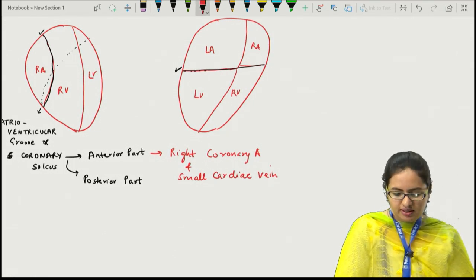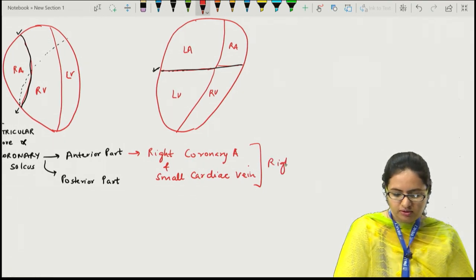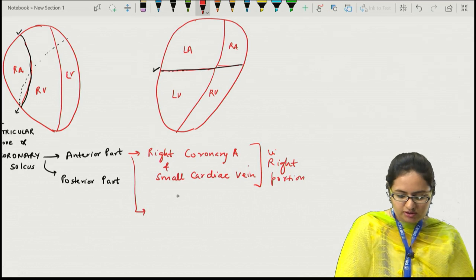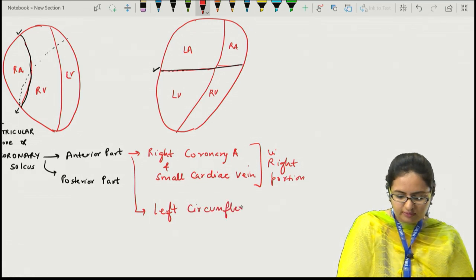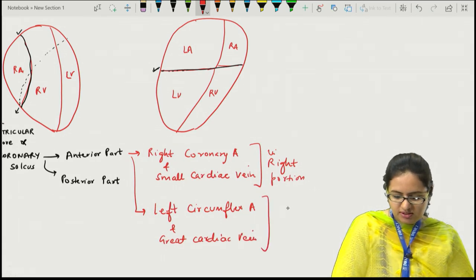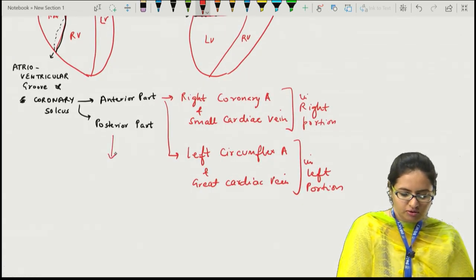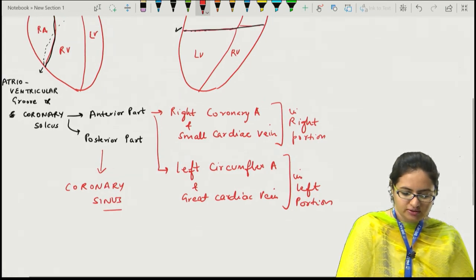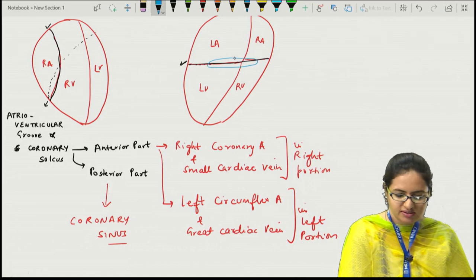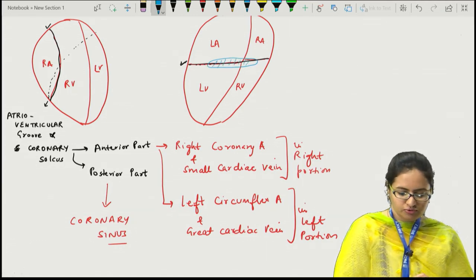The right coronary artery and the small cardiac vein run in the right portion of the anterior part of the coronary sulcus. Towards the left portion, we have the left circumflex artery along with the great cardiac vein. In the posterior part of the coronary sulcus, the coronary sinus is present — a large venous sinus located towards the posterior side.